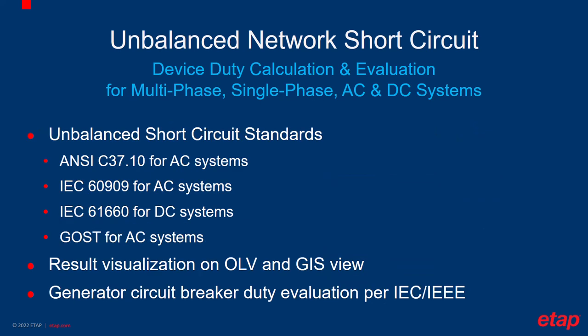For short-circuit faults, the program calculates the total short-circuit currents, as well as contributions of individual motors, generators, and utility ties in the system. Fault duties are in compliance with the latest additions of ANSI IEEE standards — the C37 series — as well as IEC standards such as 60909 for AC systems and IEC 61660 for DC systems, as well as GOST. The results can be viewed on either the one-line diagram or the GIS system. And with ETAP 22, you are also able to perform generator circuit breaker device duty evaluation per the latest IEC/IEEE standard.